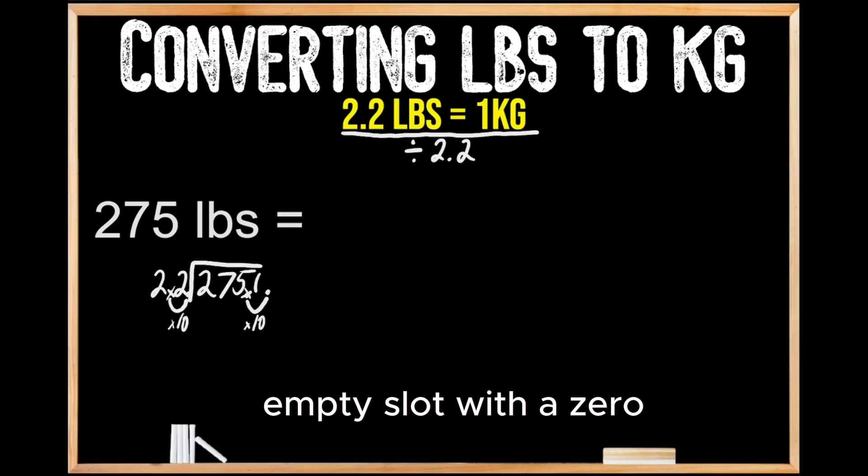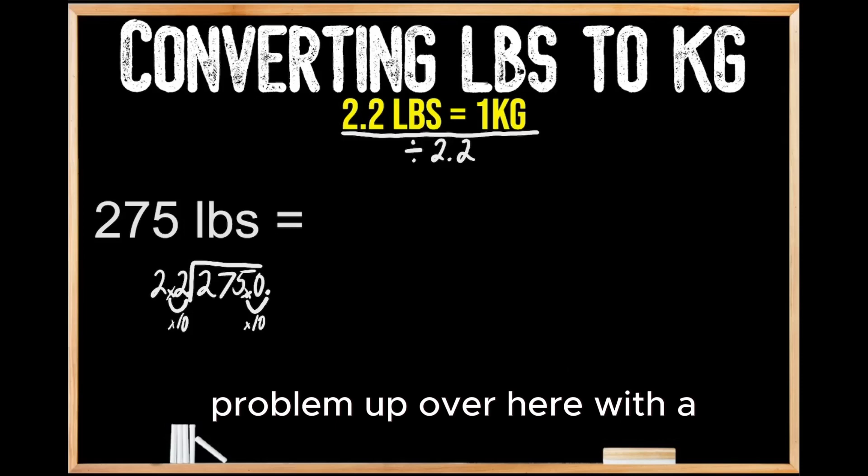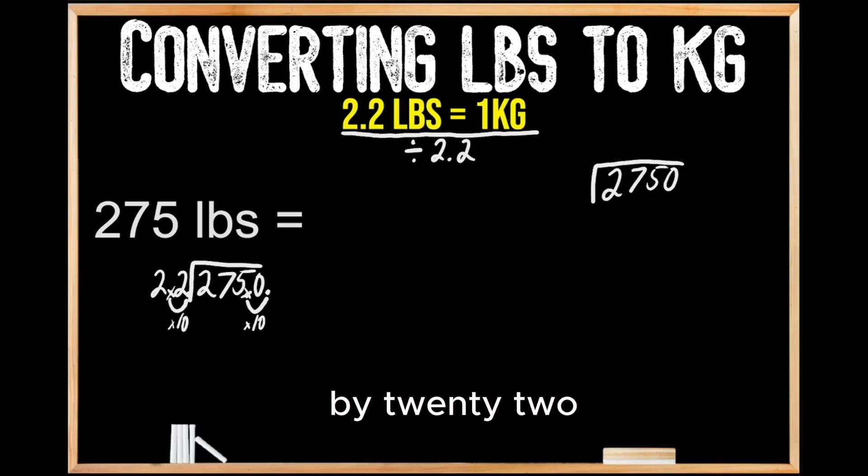Then we're going to fill that empty slot with a zero. So now we're going to be dividing 2,750 by 22 to convert the pounds into kilograms. Let's set this problem up over here with a bit more space, so we have 2,750 being divided by 22.